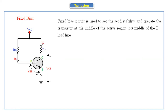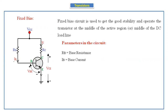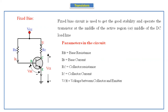The fixed bias circuit is used to get good stability — that is, to operate the transistor at the middle of the active region or middle of the DC load line. To keep the operating point in the middle, we use this fixed bias. The parameters in the circuit: Rb is the base resistance, Ib is the base current, Rc is the collector resistance, Ic is the collector current, Vce is the voltage between collector and emitter, Vbe is the voltage between base and emitter, and Vcc is the biasing voltage.